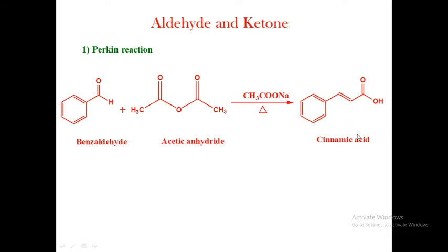Why is it called an acid? Because it contains a carboxylic group, that is COOH — the carboxylic acid group. That is why we call it an acid. It is also known as an alpha-beta unsaturated acid. Alpha-beta means the carbon adjacent to the functional group is the alpha-carbon, and the next one is the beta-carbon. Unsaturated means there is a carbon-carbon double bond. That is the alpha-beta unsaturated acid.